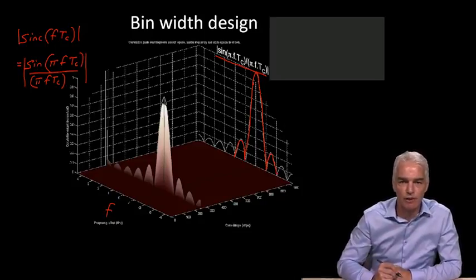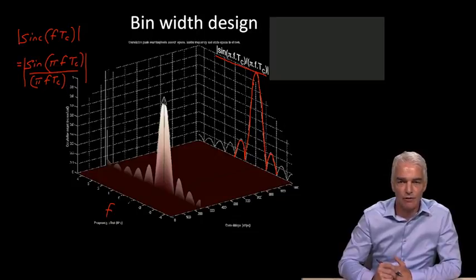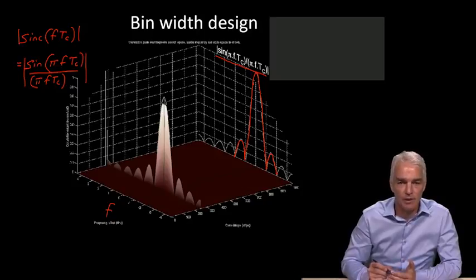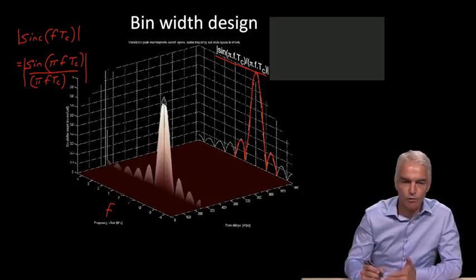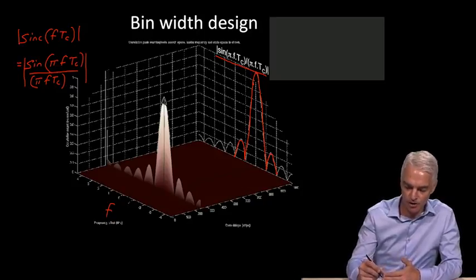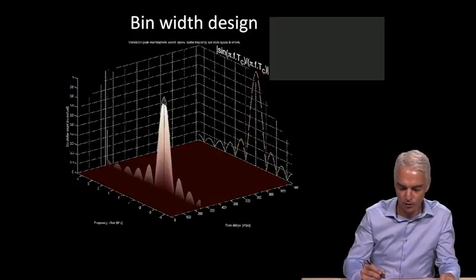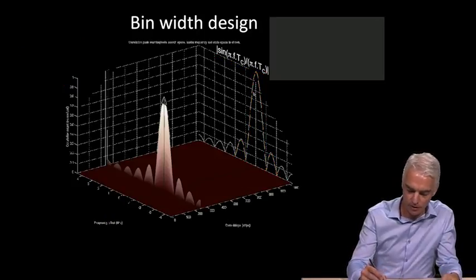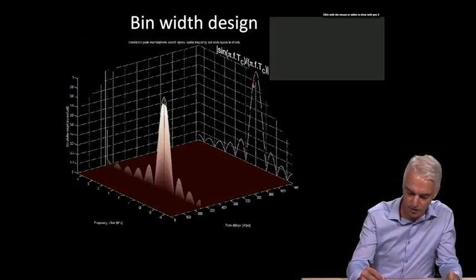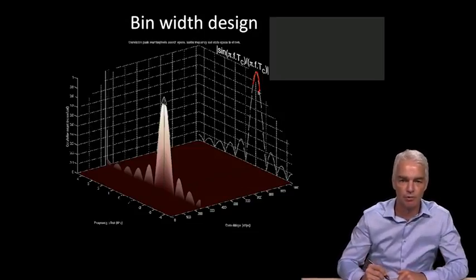Now that we know that formula, we can try out different values of coherent interval and frequency offset and decide how wide a bin we can search for before we must go and search another frequency. How wide we search for depends on how far down we're prepared to go, how much sensitivity we're prepared to give up.